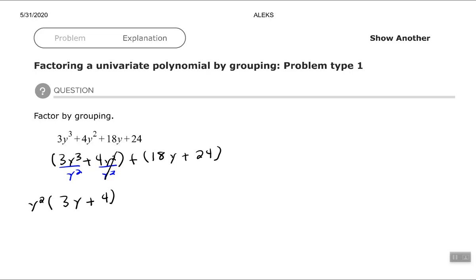Now for 18y and 24. So if I look at those two terms, they don't both have y, so I know I can't factor out a variable. The largest number that they both can be divided by is six. So my GCF is six. So it gives us 3y plus 4 in the parentheses.